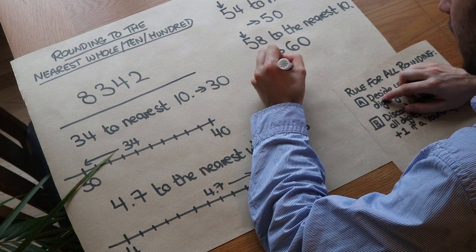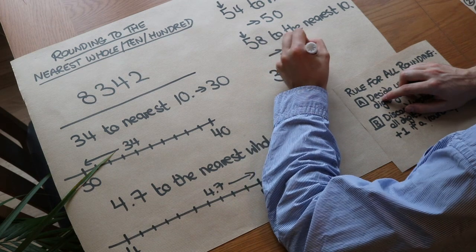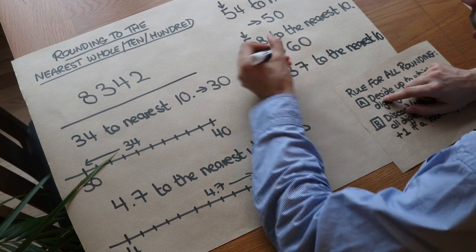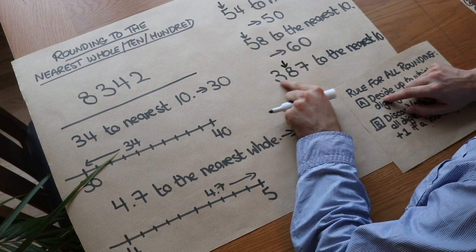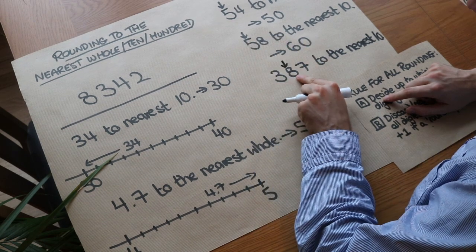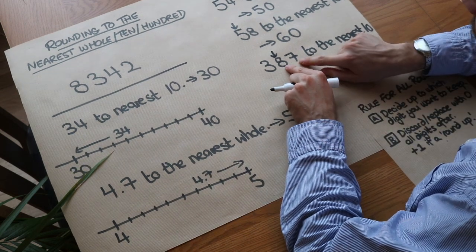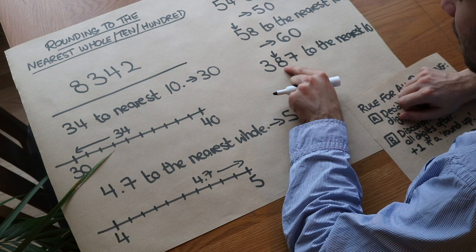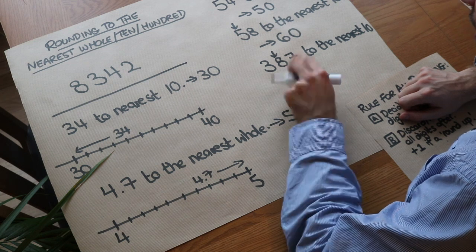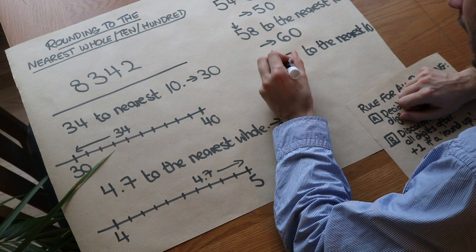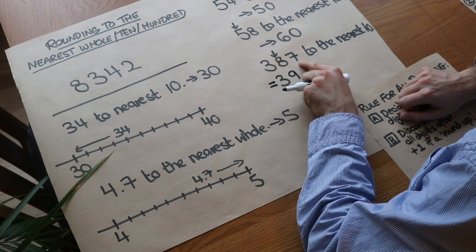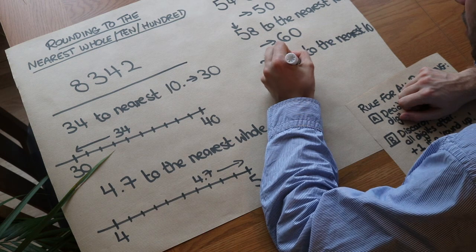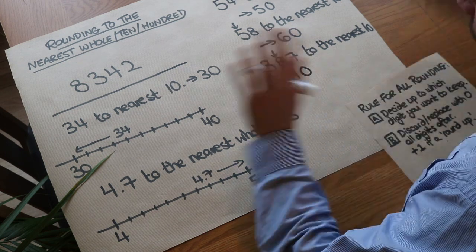What about 387 to the nearest ten? We keep everything up to and including the tens digit - that eight. We check the next digit: is seven greater than or equal to five? Yes, so that eight goes up to nine. We still keep the hundreds digit. That eight became a nine, and the seven gets wiped out - replaced with zero - because we're only keeping up to the tens digit.